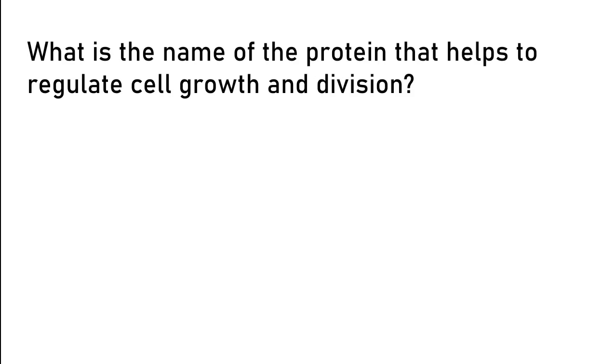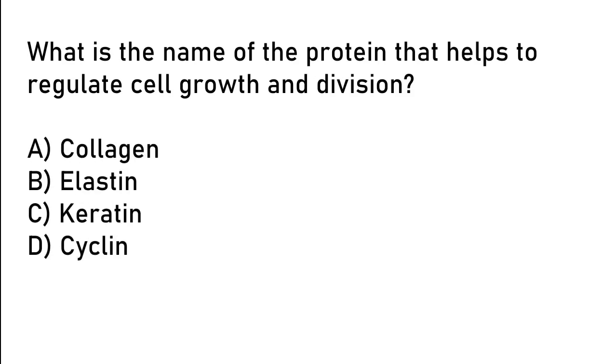What is the name of the protein that helps to regulate cell growth and division? Collagen, elastin, keratin, cyclin. So the correct answer is option D. Cyclin.